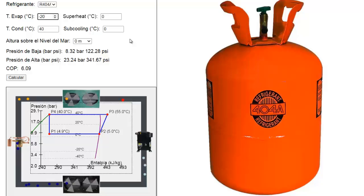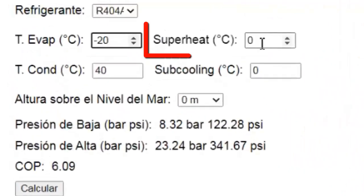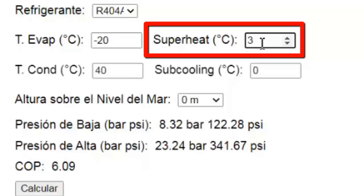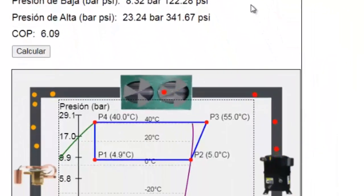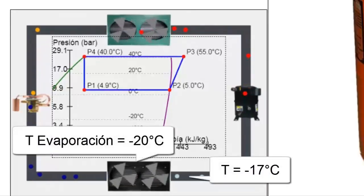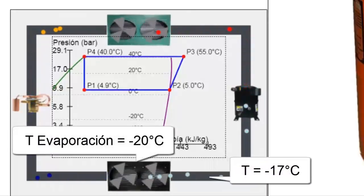For a more precise calculation, we will set the superheat adjustment to 3 degrees Celsius at the evaporator outlet. Remember that superheat is the temperature increase of the refrigerant gas inside the evaporator.